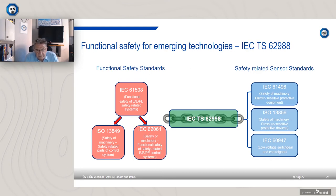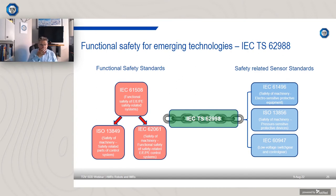TS 62998 is in two parts, where Part 2 is a worked example of an outdoor AMR where different sensor technologies are combined to create the appropriate levels of systematic safety integrity.